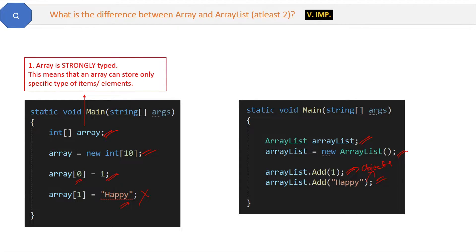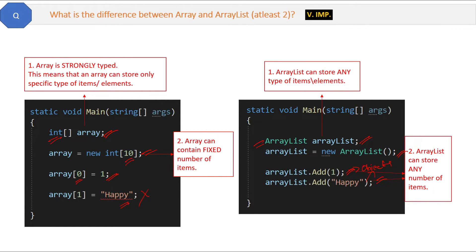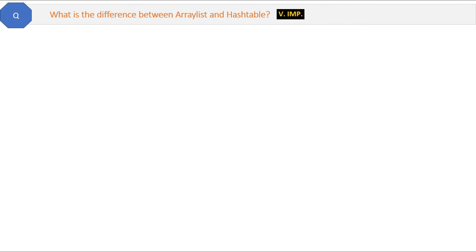The first difference is that Array is strongly typed — it can store only one type of element, like integer or string, no mixing. ArrayList can store any type of element; no type is specified and you can add both integer and string values. The second difference is that Array can contain a fixed number of items — you must give the count in advance, here we assigned 10. ArrayList can store any number of items; there is no count required, you can add as many items as you want.